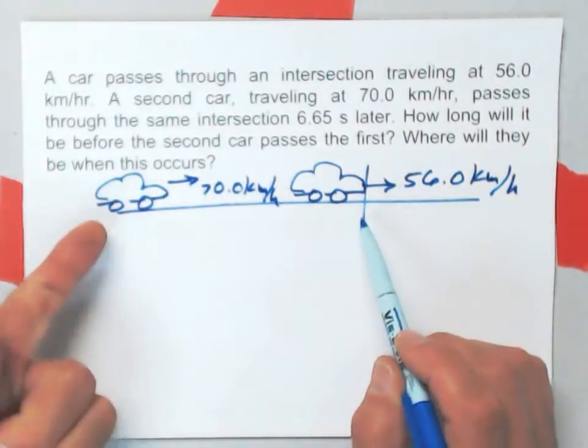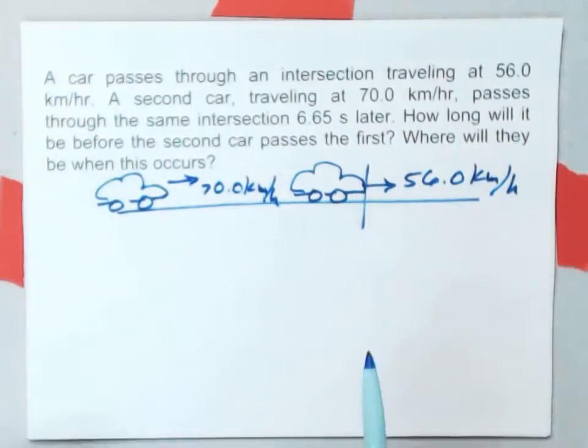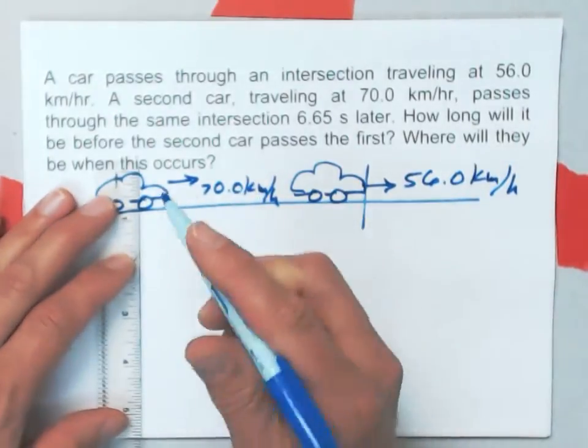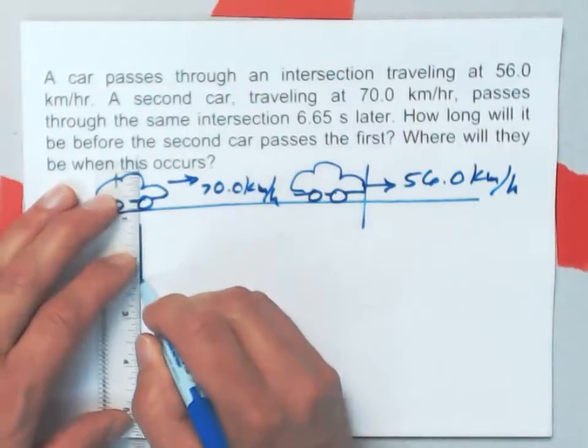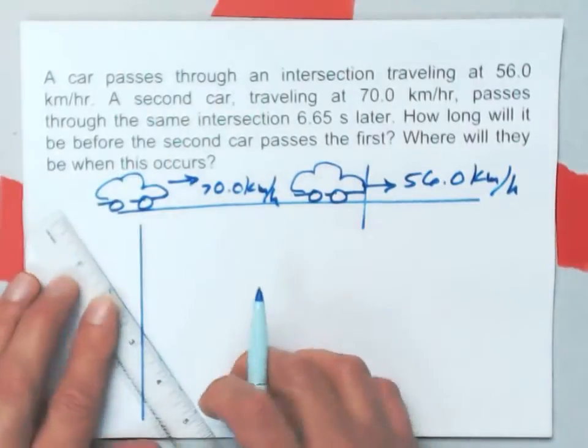In a short time we'll figure out how far the second car must have been behind the first. But before I do that I want to make a graph of this situation, the motion that's going on here.